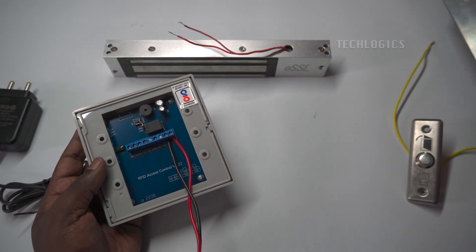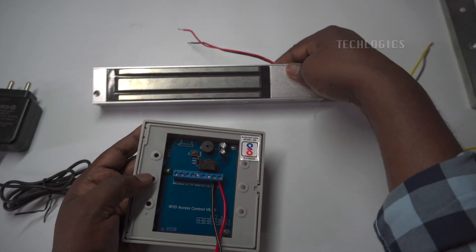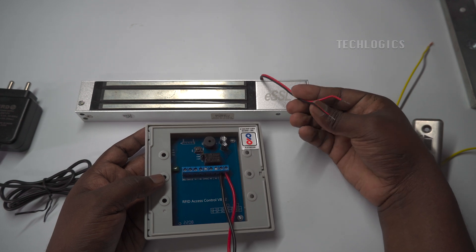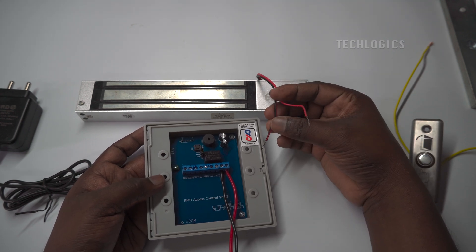Now let's connect the electromagnetic lock's positive terminal to the access controller's NC normally closed terminal.